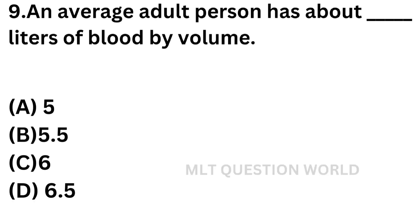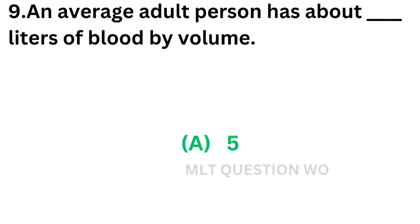Question number 9: An average adult person has above dash liters of blood by volume — that means the normal blood volume. Option A: 5. Option B: 5.5. Option C: 6. Option D: 6.5. The correct answer is option A: 5 liters. An average adult person has above 5 liters of blood by volume.